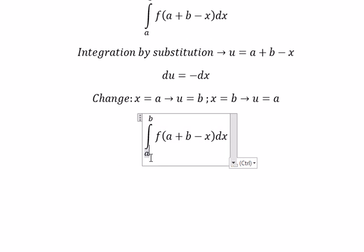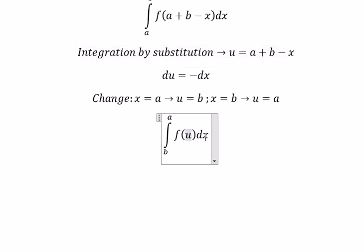So a will change to b, b will change to a. The expression changes to u, and dx changes to negative du, so we put the negative next to du.